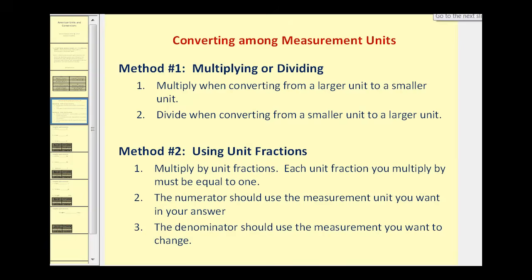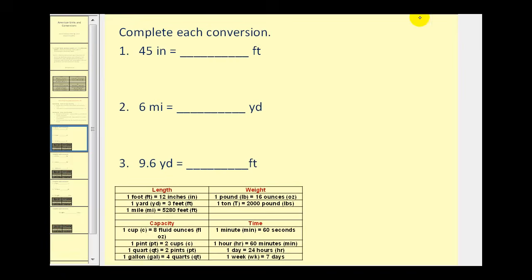Let's take a look at how this will work. If we want to convert forty-five inches to feet, the first step is to write forty-five inches in fraction form, so that would be forty-five inches over one. Next we're going to multiply by a unit fraction, so we'll look at the table and find the relationship between inches and feet. We have one foot equals twelve inches.